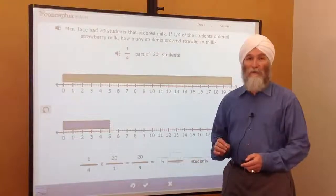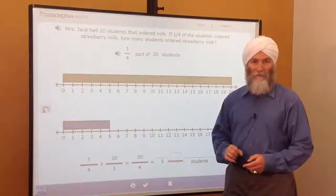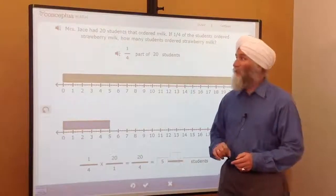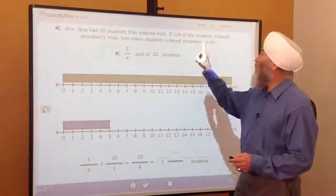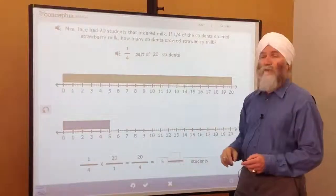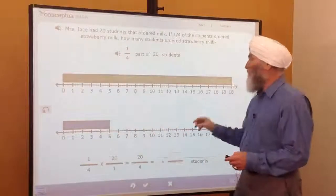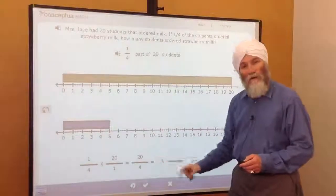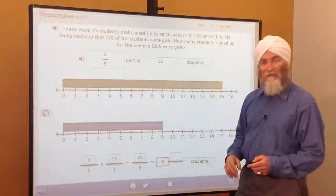In their second week, students move from groups of problems to parts of problems. They're still multiplying fractions, but this distinction is important. Mrs. Jays had 20 students that ordered milk. One-fourth of the students ordered strawberry milk. That's one-fourth part of 20 students. Make the 20 students, find the one-fourth part, and the mathematics follows. Similarly, with three-fifths parts of 15 students.